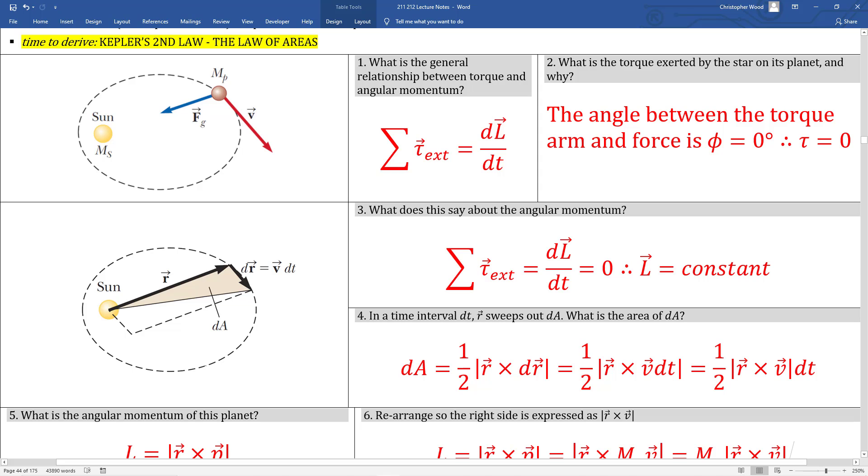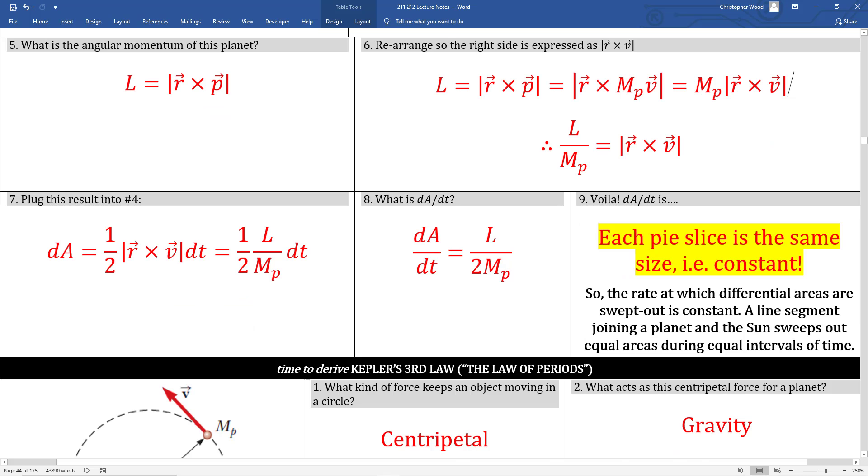Specifically, torque, angular momentum, and cross product. Box number nine is saying a line segment joining a planet and the sun sweeps out equal areas during equal intervals of time. Which may not sound too significant to you right now, but turns out to be hugely significant. This was one of the first breakthroughs into figuring out how stuff moves around in the sky.